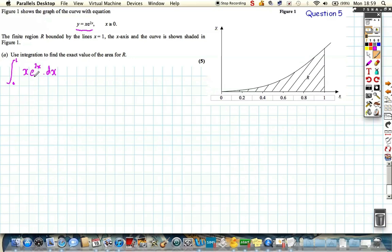You should notice straight away that this is a product between two terms, the first term being x, the second term being e to the 2x. So with that in mind, we need to use integration by parts.